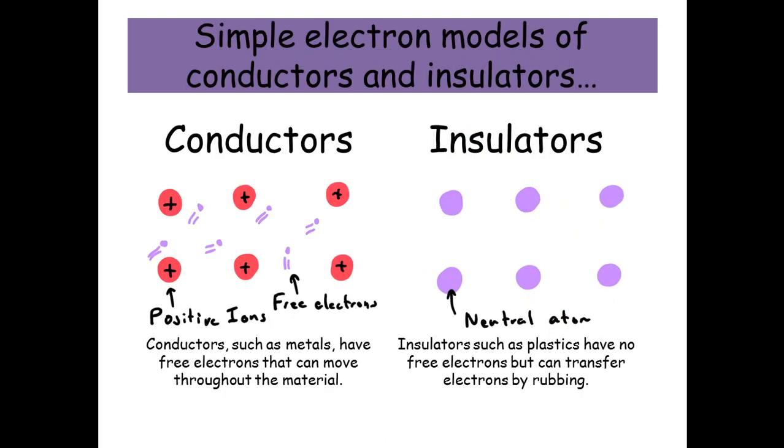And finally, simple electron models of conductors and insulators. With a conductor, such as metals, they have free electrons that can move through the material. Whereas with an insulator, such as plastic, they have no free electrons. But you can transfer electrons by rubbing.